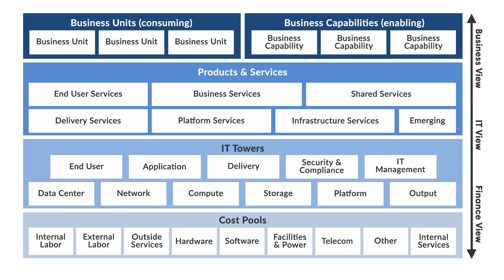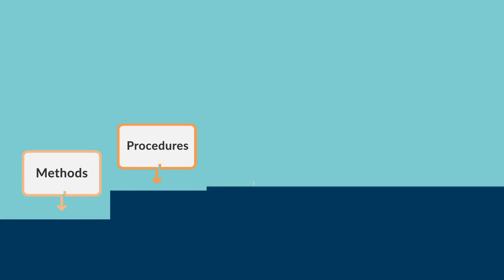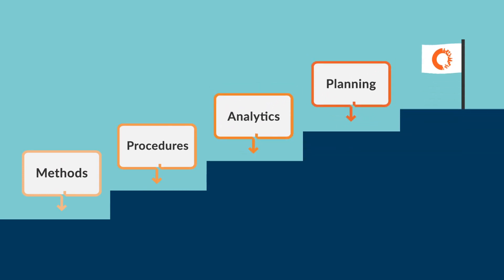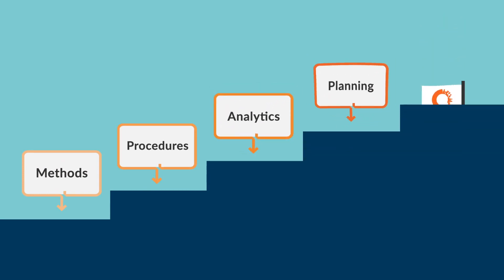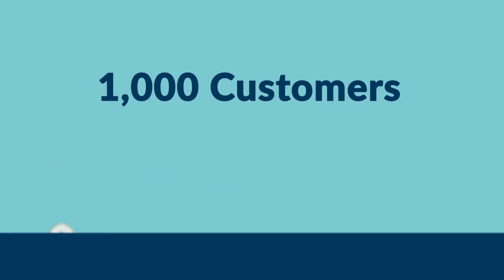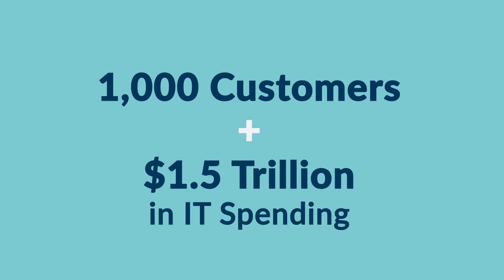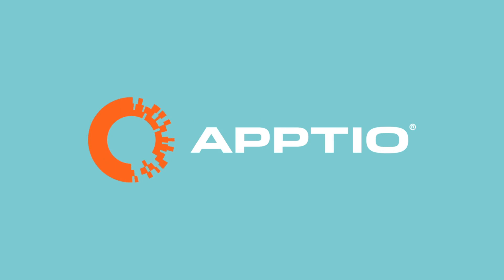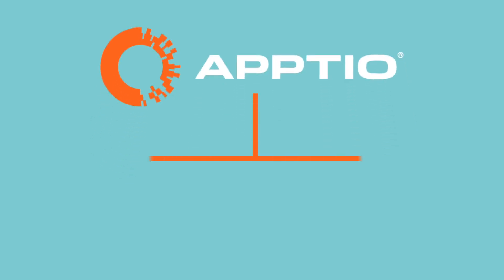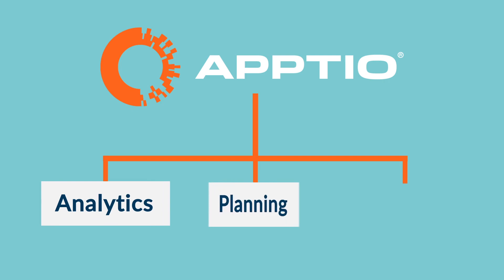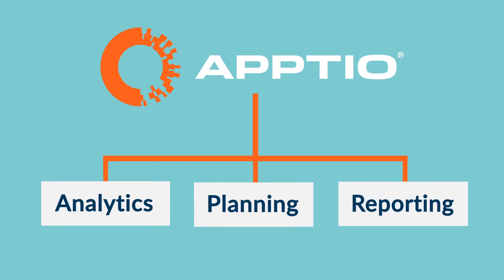But this structure is just the beginning. In addition to what the taxonomy is, organizations getting started on their TBM journey also need to understand how to implement it. With the experience of over 1,000 customers accounting for over $1.5 trillion in IT spending, Apptio is the leader in TBM products and implementations and has developed the methods and procedures needed to translate the TBM taxonomy into powerful analytics, planning, and reporting.